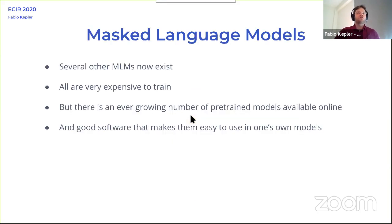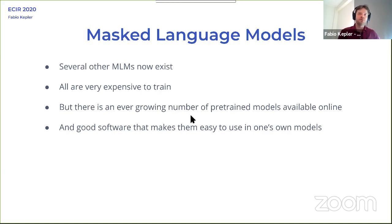Nowadays there are several BERT-based models, slightly different, some also using Muppet names. They all share in common that they're really expensive to train, although we can use unlabeled data — they take a long time and a lot of TPUs or GPUs. The good thing is that these models are available online and you can use Hugging Face Transformers, for example, to use them — which is pretty easy.